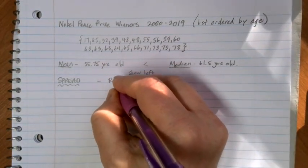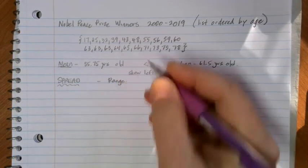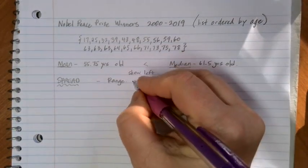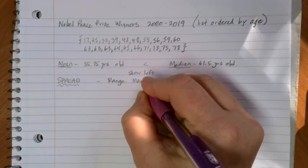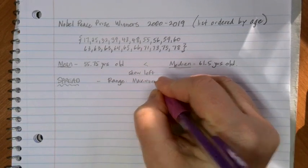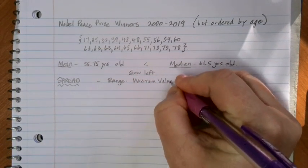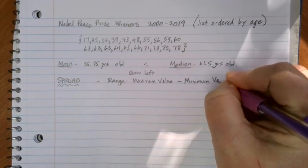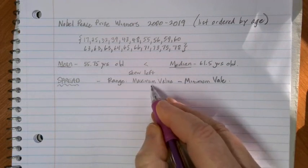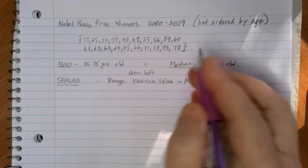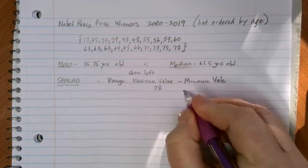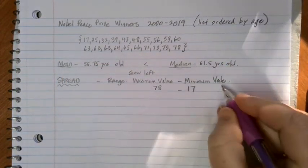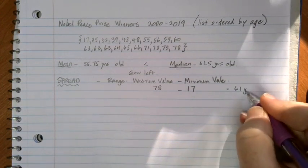Another term that we use for spread is also the range. Mathematically we can actually get a range from our data set by just taking the biggest number or the maximum value and subtracting the smallest value or the minimum value. With our data set here, the maximum value is the oldest person winning the prize which was 78 years old. The minimum value was the youngest person winning the prize which was 17 years old. And if we subtract those we get a range of 61 years.